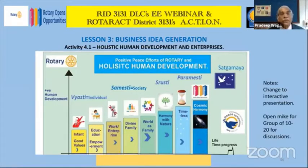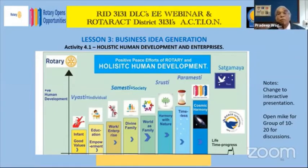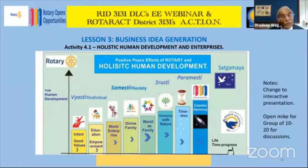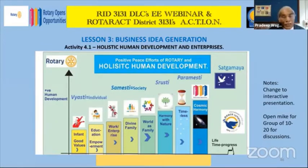There is one exercise on holistic human development and enterprise. As Pathakji said, opportunities extend from health all the way up to spirituality. If you look at infant growth with good values, try to find out what enterprises you can do. For example, for infant growth, you can make good baby food, or provide activities through prayers and good developmental activities with them.